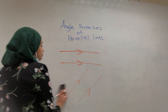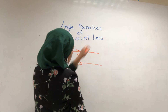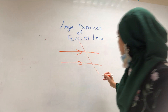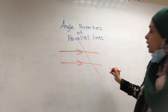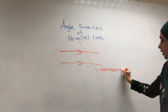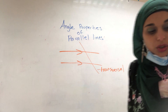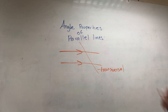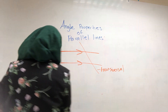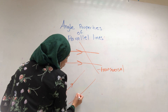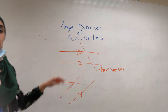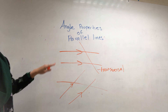Now I'm going to show you another vocabulary word. We have something called a transversal. A transversal line is a line that crosses two or more parallel lines — or two or more lines. So it's a line that goes right across any two parallel lines. A transversal line cuts through two or more lines.